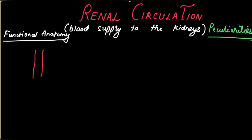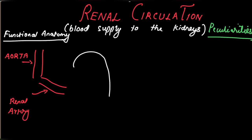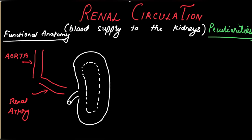We begin with the functional anatomy. This is the main artery of the body, the aorta, from which arises the renal artery. This is the kidney, which has two regions: an outer region called the cortex, where lie the cortical nephrons, and an inner region called the medulla, where lie the medullary nephrons.